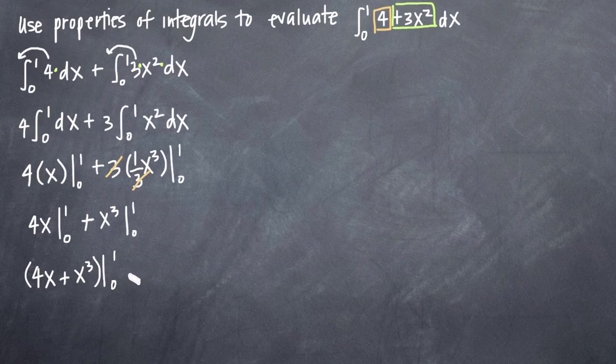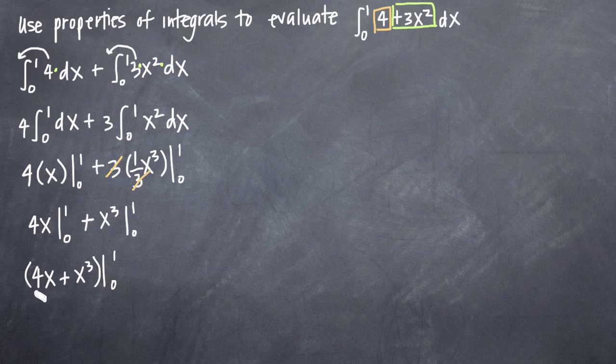And if we want to remember that we're evaluating the whole thing, we can put parentheses around it like this. So now what this tells us to do is when we have a function here and then we're saying we're evaluating from 0 to 1, we're going to plug the top number 1 in first. We're going to plug 1 in for x to 4x plus x cubed. Then we're going to subtract whatever we get when we plug in 0.